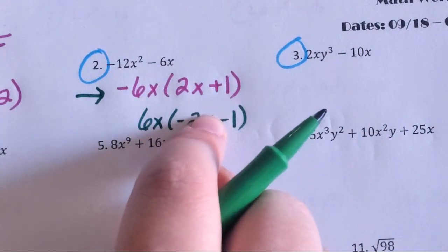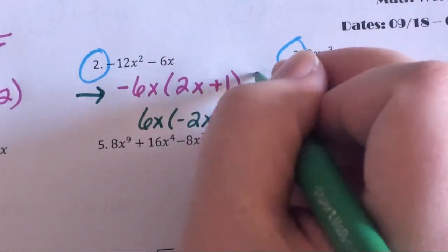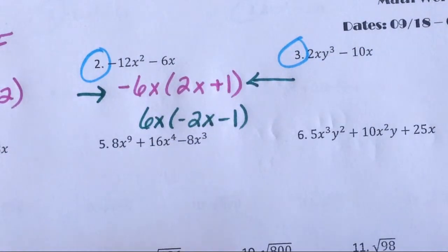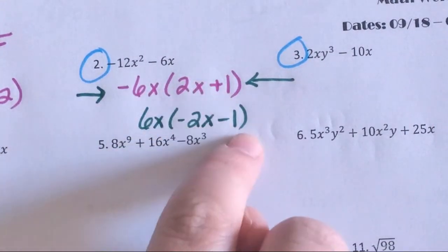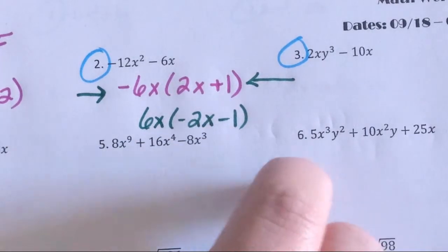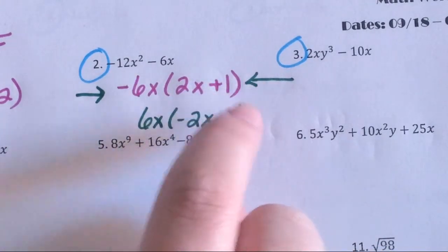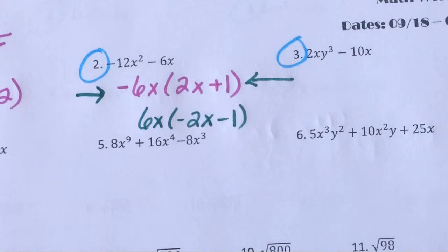He factored out a six X and a negative six X. Now, I think life is easier with Jacks' answer because he factored out the negative. Everybody inside the parentheses was positive, whereas with Nick, since he didn't factor out a negative, everyone inside is still negative. So I would have done Jacks' way, but Nick is also correct. Nick, you can have a point.